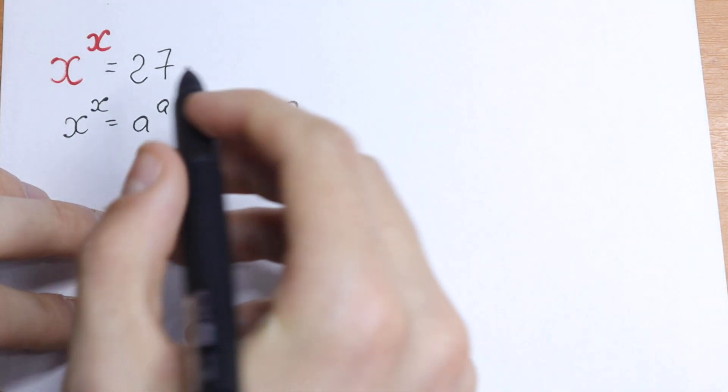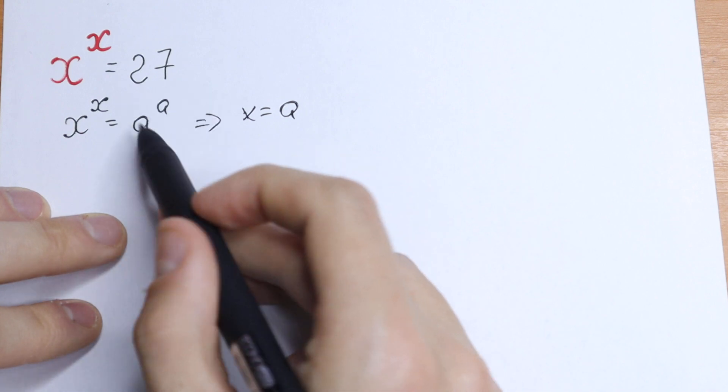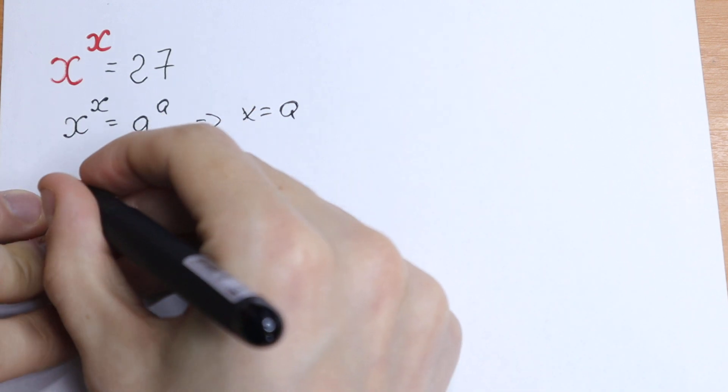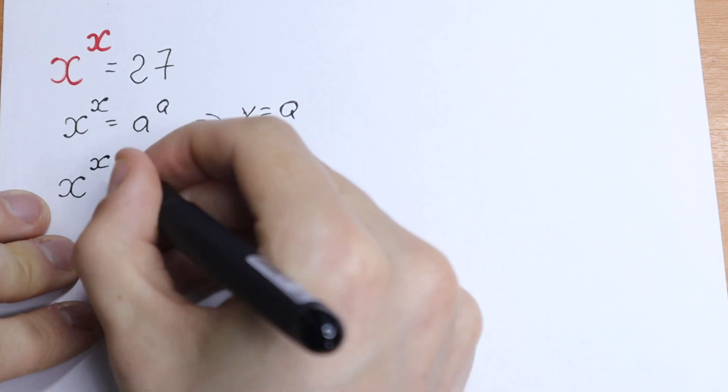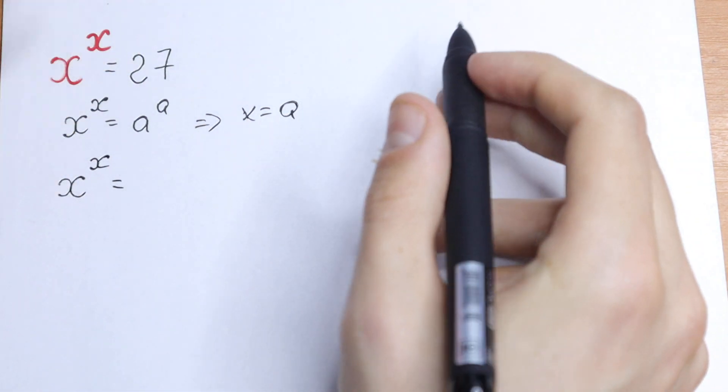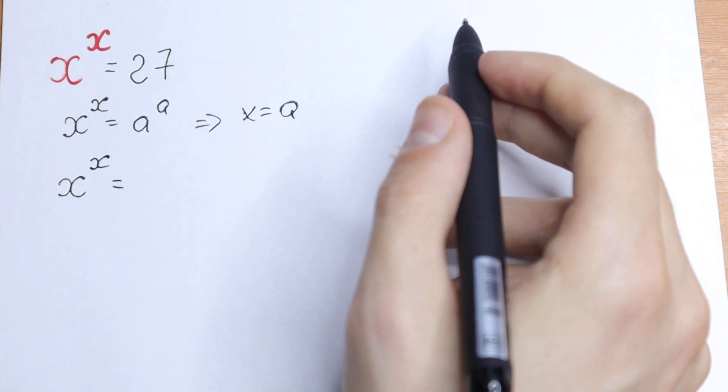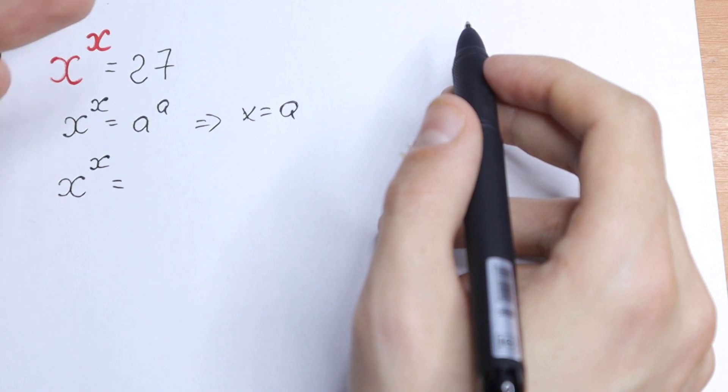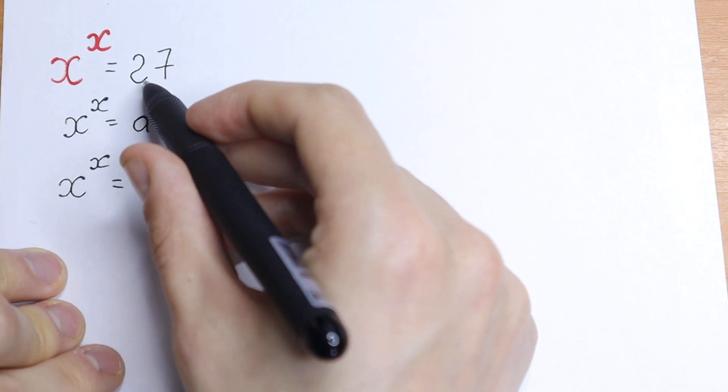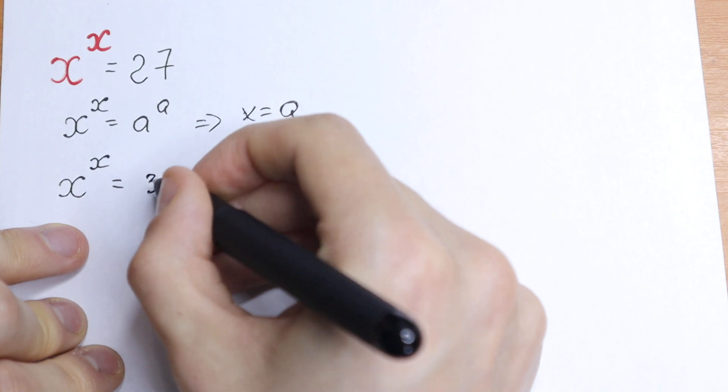Let's simplify this 27. We have x to the power x, and how can we write this 27 so we have same base and same exponent? If it's possible, of course. If it's not, we need to find another way to solve it. This 27 is 3 cubed.